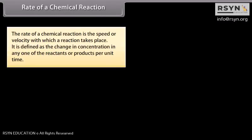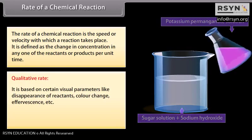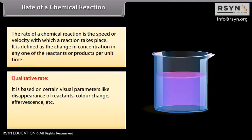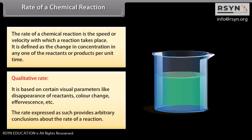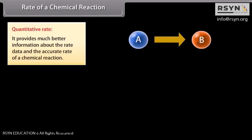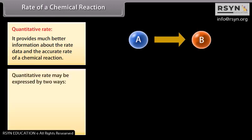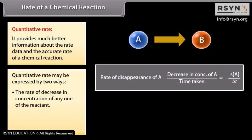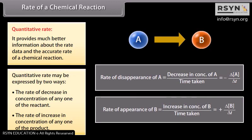The rate of a chemical reaction is the speed or velocity with which a reaction takes place. It is defined as the change in concentration in any one of the reactants or products per unit time. It can be expressed by two ways: qualitative rate, which is based on certain visual parameters like disappearance of reactants, colour change, effervescence etc., providing arbitrary conclusions; and quantitative rate, which provides much better and accurate information about the rate of a chemical reaction.